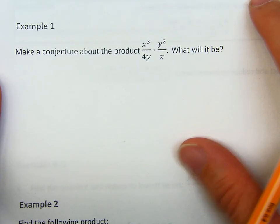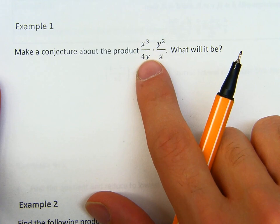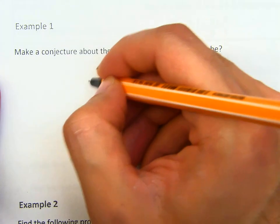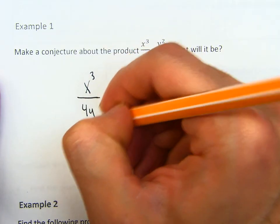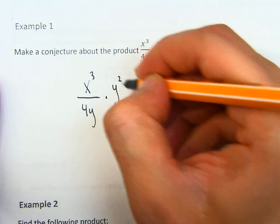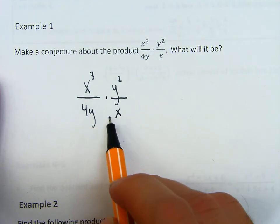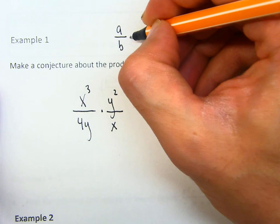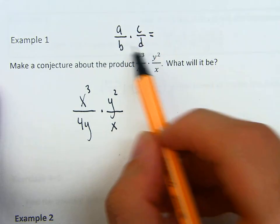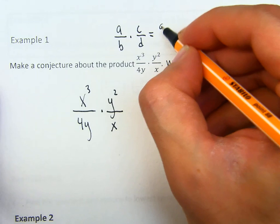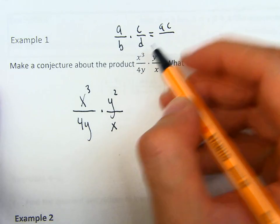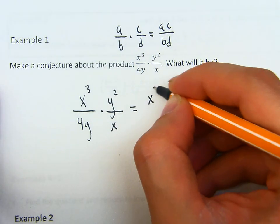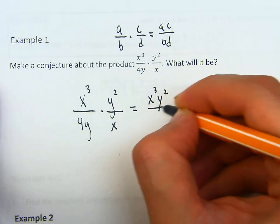So notice that if we have this rational expression — x cubed over 4y times y squared over x — the idea is that we will just multiply across. If we have a over b times c over d, all we're doing is multiplying the top and multiplying the bottom.